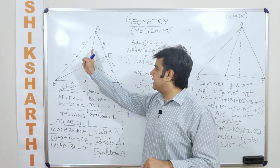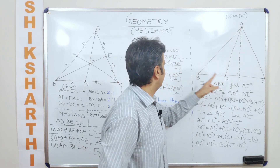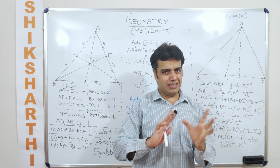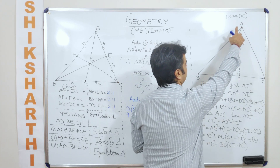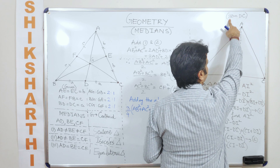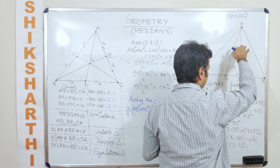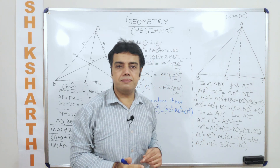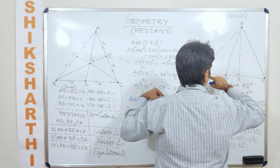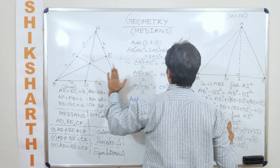For this, I am taking triangle ABC, in which it is given that BD equals DC. Therefore AD becomes the median. Similarly, I can talk about the other medians as well. But if we understand this concept here, we can replicate the same thing for the others.